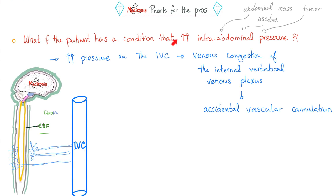As a general rule, the level of the sympathetic block is more cephalic (higher) than the level of the sensory block, which is more cephalic than the level of the motor block.